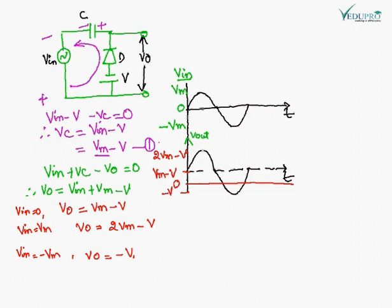This is what a Clamper circuit does — it only shifts the waveform above or below the 0 level. The 0 level is shifted either upward or downward depending on the circuit configuration.